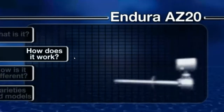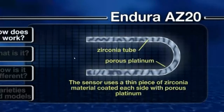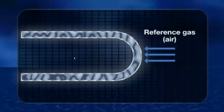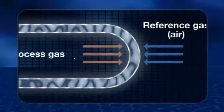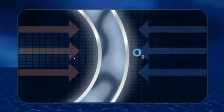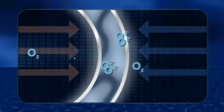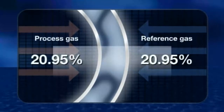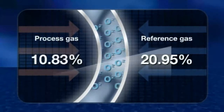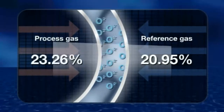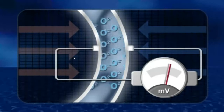How does the Endura AZ-20 work? The sensor uses a thin piece of zirconia material coated on each side with porous platinum. Air is supplied to one side as a reference gas providing a constant oxygen concentration; the process gas is presented to the opposite side. The platinum acts as a catalyst, converting molecular oxygen to oxygen ions, which migrate through the solid zirconia electrolyte. When oxygen concentration is equal on both sides, ion migration is zero. Where concentrations differ, migration increases to reestablish equilibrium, generating a potential difference used to measure oxygen concentration.